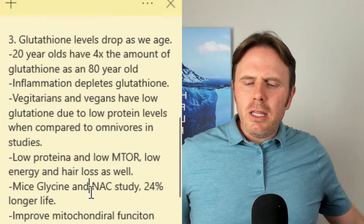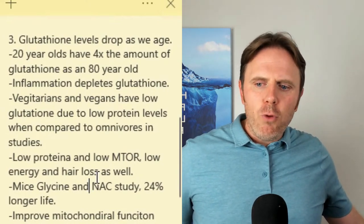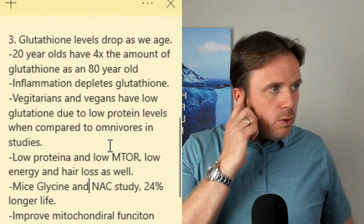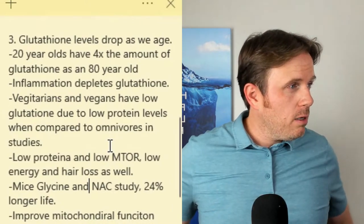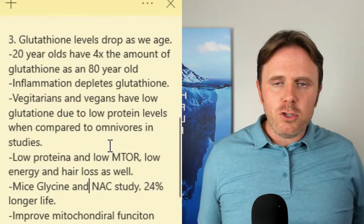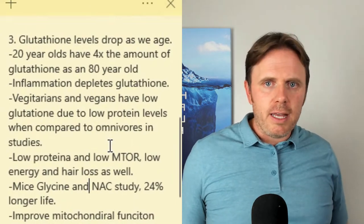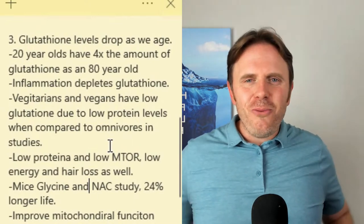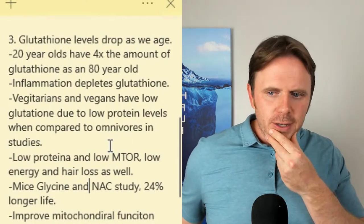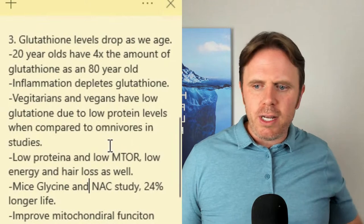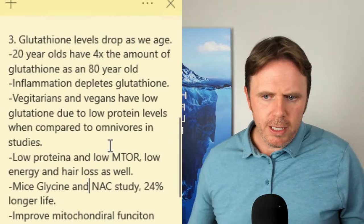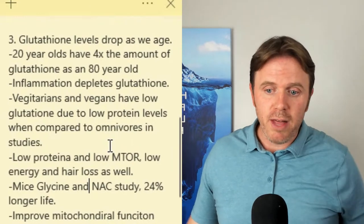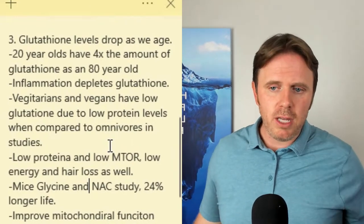In the mice study where they were given glycine and NAC, they had 24% longer life than the control groups. Now, I don't go all in on animal studies — we have to look at different animals since they respond differently to different foods. But when you look at human studies on glutathione and collagen-based research, you can use deductive reasoning and say there definitely is some benefit. This mouse study was very interesting.